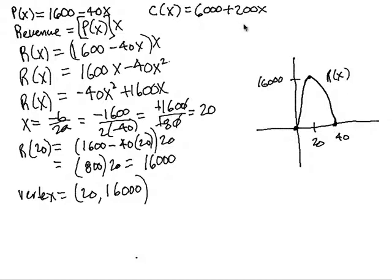Now we can graph the cost function. It has a y-intercept of 6,000 and a slope of 200. Now what would be interesting would be where these two graphs might cross. We can go ahead and put a y-intercept of 6,000.